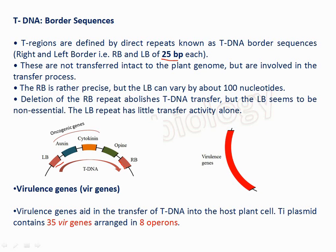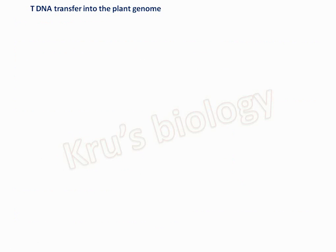The size of the left and right border sequences of T-DNA is 25 bp each. These border sequences are not transferred to the plant genome but are involved in the transfer process. Of both borders, the right border is very important — if you delete the right border from T-DNA, the T-DNA is not transferred to the plant and transformation is not carried out. The Vir genes are responsible for virulence, meaning causing disease, and there are 35 genes arranged in eight operons — operons being groups of genes that function together.